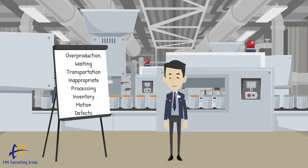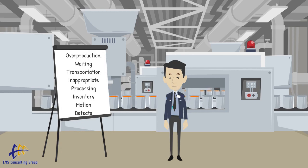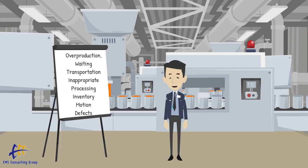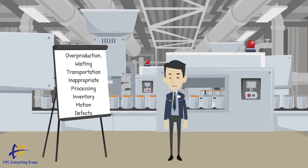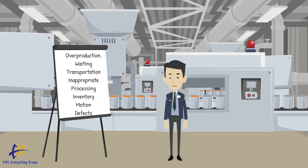The wastes Ohno identified were: overproduction, waiting, transportation, inappropriate processing, excess inventory or storage, unnecessary or excess motion, and defects. Let's talk briefly about these wastes and what each of them means.